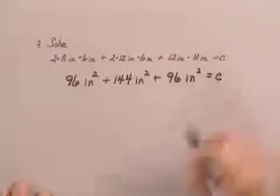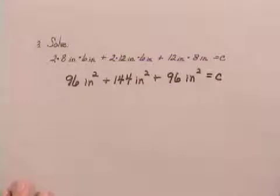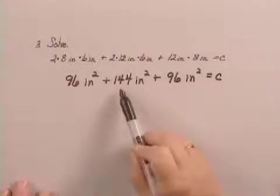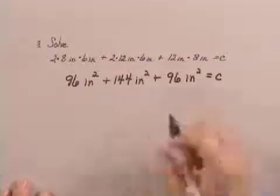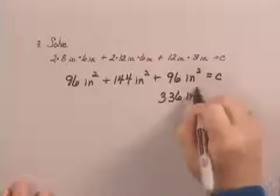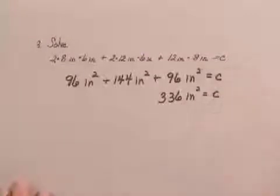And that equals C. Now that I've done the multiplications, I can do the additions. 96 square inches plus 144 square inches plus 96 square inches is 336 square inches. And that equals C, which is the total area.